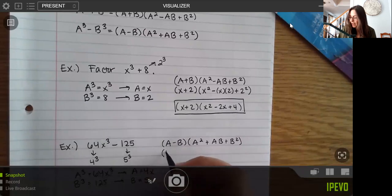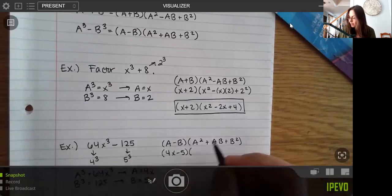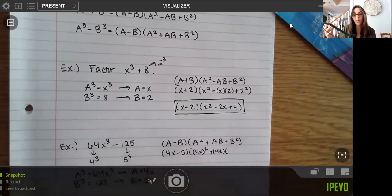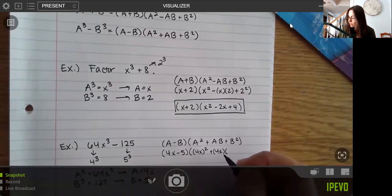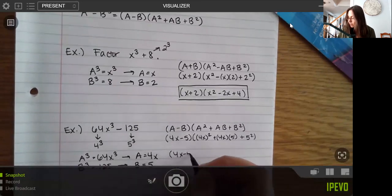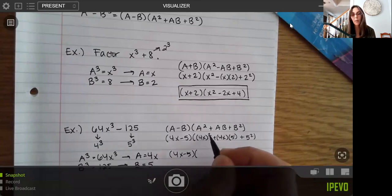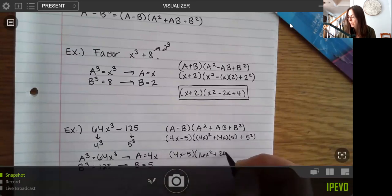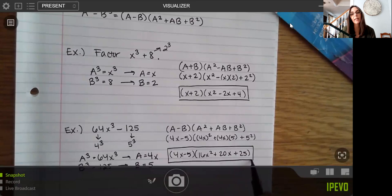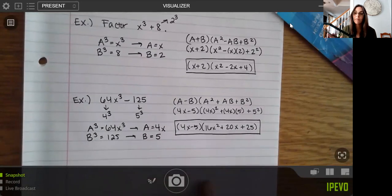And then I'm just going to plug in my a and my b values right where I see the letters in the formula. Now I am using parentheses when I plug in that 4x because when I square it, I do have to square the whole thing. So I'm going to simplify here. So 4x squared, I square both parts. So that would be 16x squared. Here, four times five is 20, so 20x. And then five squared is 25. And again, these are going to be broken down as far as they can go. So you don't have to worry about checking or anything like that. That's going to be your final result.